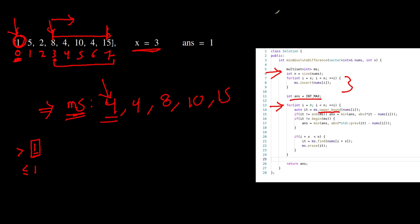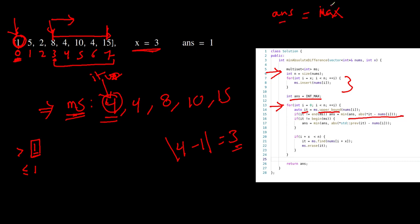Initially the answer is INT_MAX. The upper bound iterator points to 4, so 4 minus 1 = 3, which is less than the answer, so we update the answer. Now 4 is the value greater than 1. We also need the value less than or equal to 1, so we check the previous of the iterator. The previous is not valid — this is why we check if the iterator is at the beginning of the multiset — so this condition does not apply.